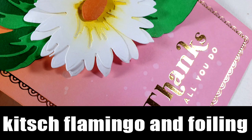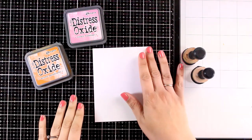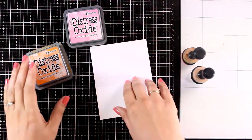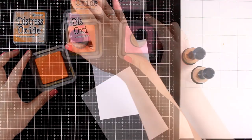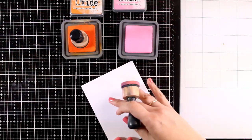Hi and welcome to another card-making video. Today I'm going to play with the February kit of Foiling by Spellbinders and I'm also going to play with the new color Kitsch Flamingo by Tim Holtz.